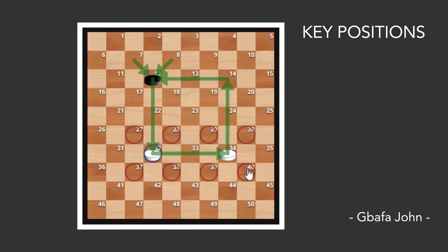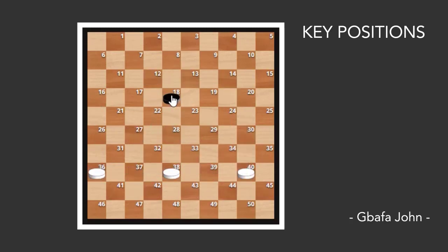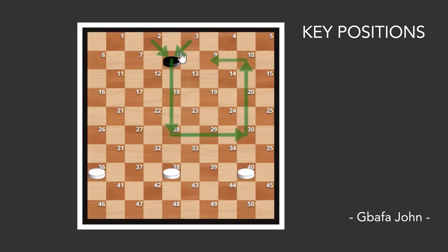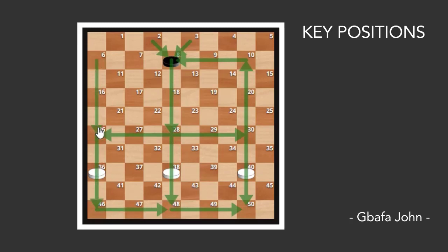You have a piece at 37, 37 can move to 32. Or you have a piece at 38, 38 can move to 32. So this is how this one also works. These are some of the key moves you need to know. Let's say your opponent plays 3 to 8 or 2 to 8. Now with this one, if you draw the square — let's use the double square, and I'll use it to explain it vividly for you to understand it.